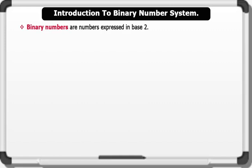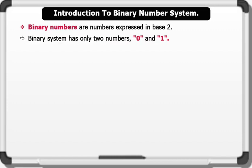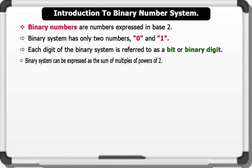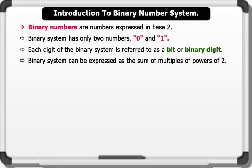Binary numbers are numbers expressed in Base 2. The binary system has only two numbers: zeros and ones. Each digit of the binary system is referred to as a bit, or binary digit. Note that the binary system can be expressed as the sum of multiples of powers of 2.